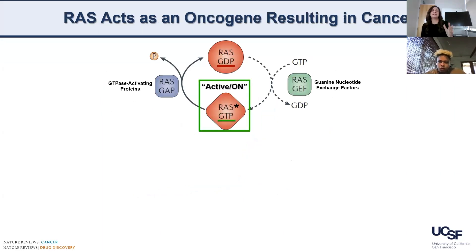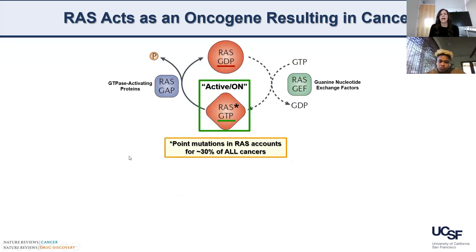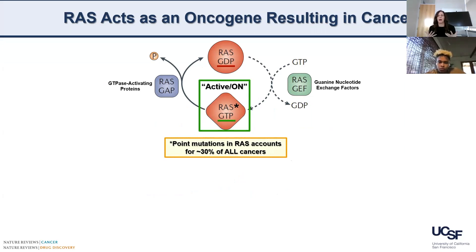What happens is that in cancer, you can get actual mutations in these RAS proteins. And when you get a mutation in these RAS proteins, that can be one of the leading causes of you developing some sort of cancer. Just to give you an idea, when this RAS gene does contain a mutation, it is responsible for over 30% of all cancers. So it's a very big, very potent molecule that is affected in many different types of cancers.